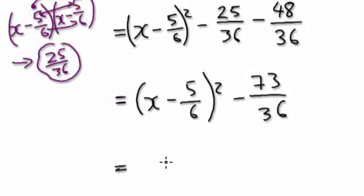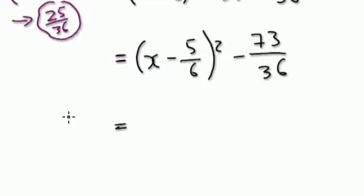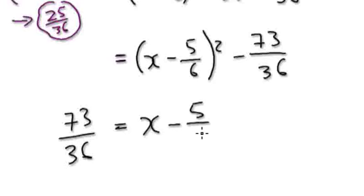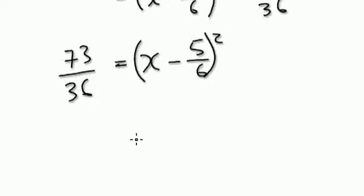So this one here. Yeah, add this thing to both sides. Okay, so add that thing to both sides. It will give you this: 73 over 36 equals x minus 5 over 6 squared here. And then square root both sides.